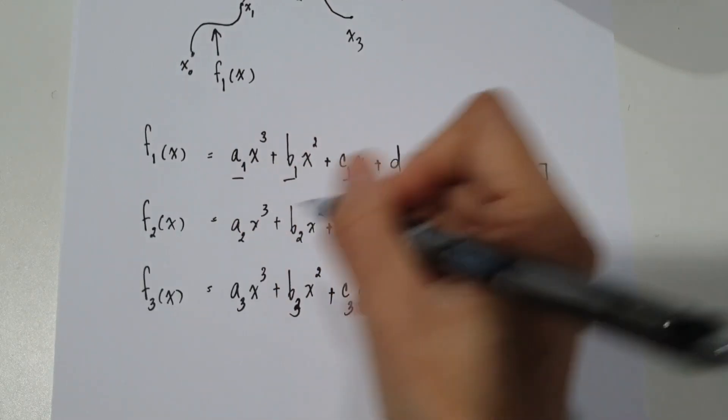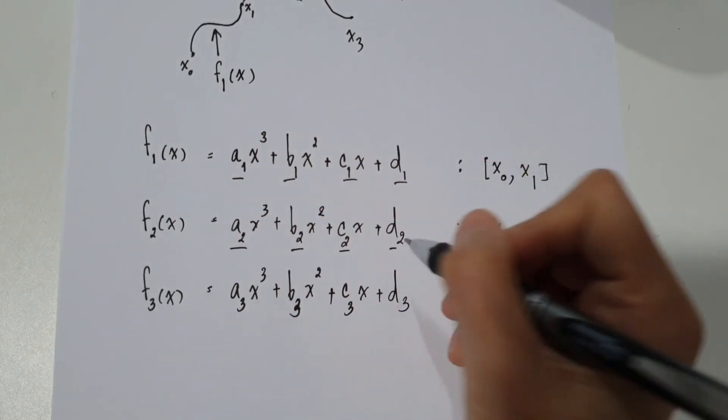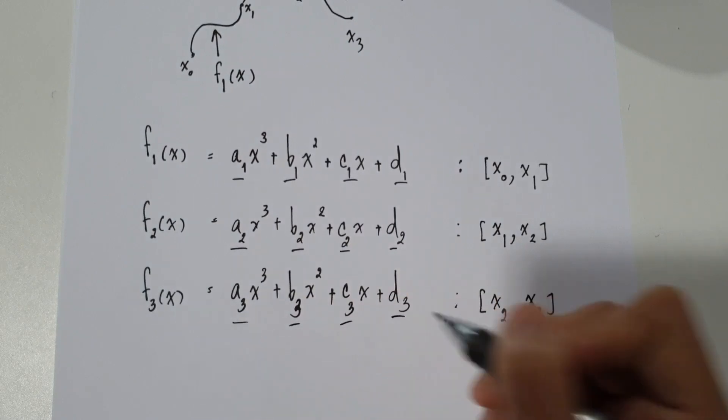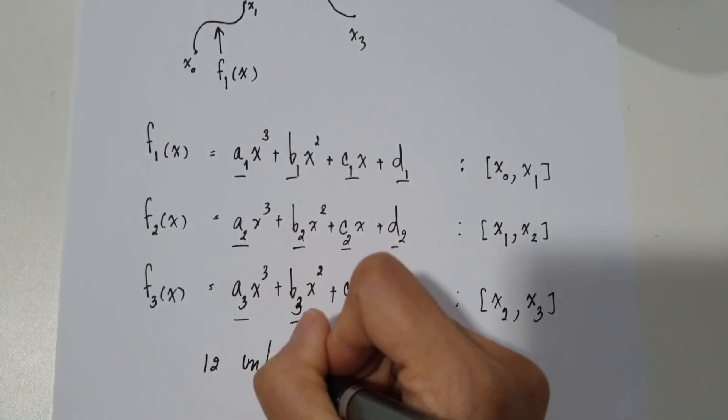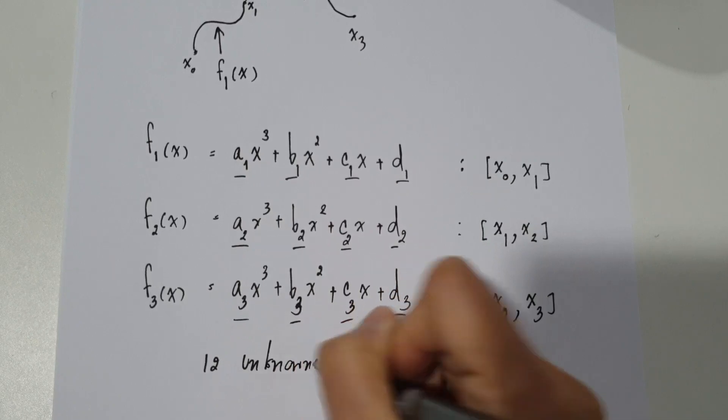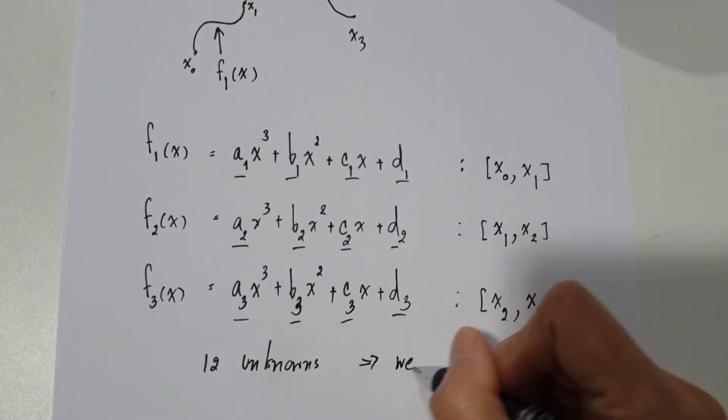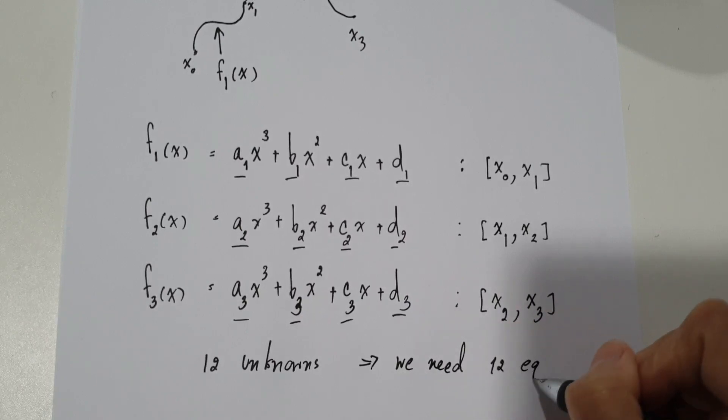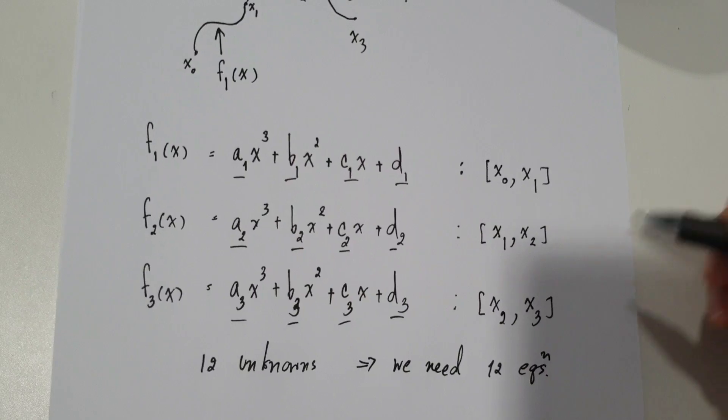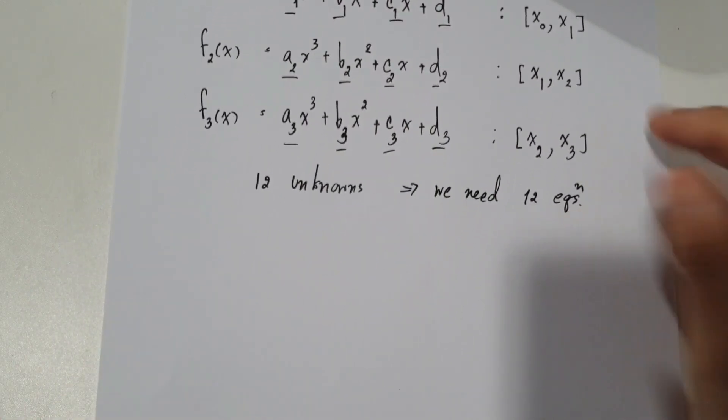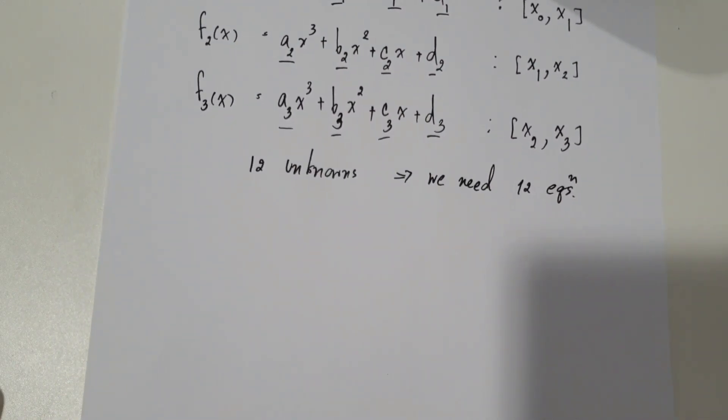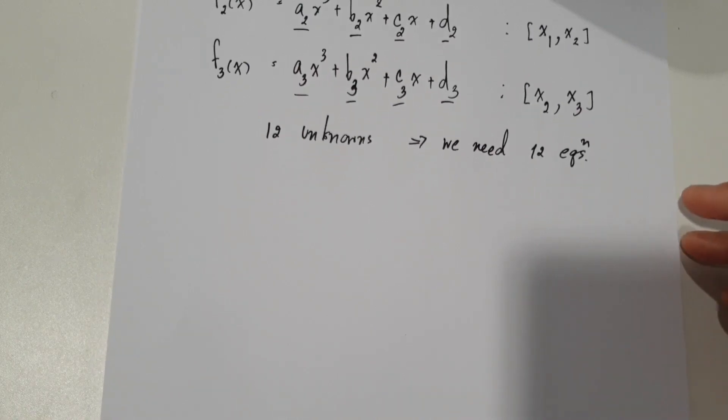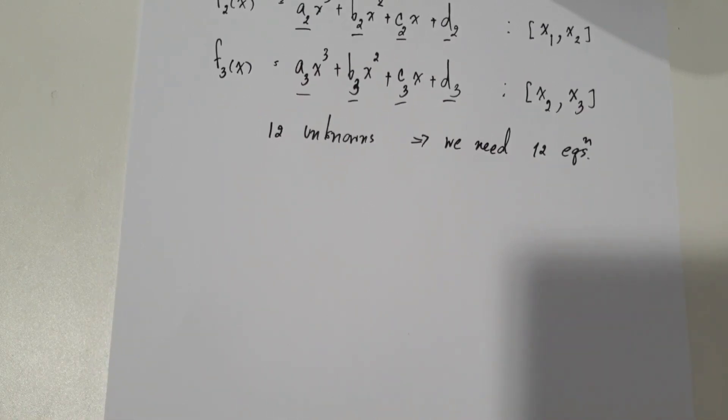So we have in total 12 unknowns. So if we want to solve, we need 12 equations for solving these unknowns. So if we do it in a similar manner to what was explained, only some conditions are different.